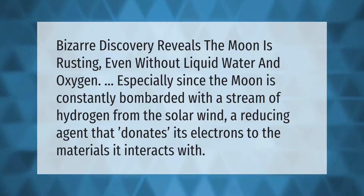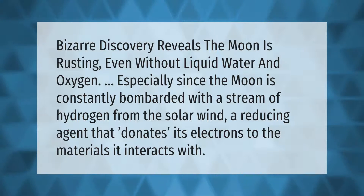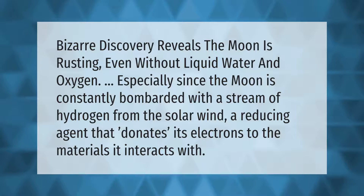A bizarre discovery reveals the moon is rusting even without liquid water and oxygen — especially since the moon is constantly bombarded with a stream of hydrogen from the solar wind, a reducing agent that donates its electrons to the materials it interacts with.